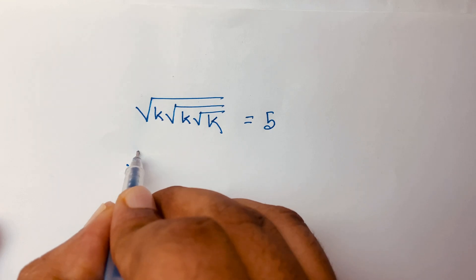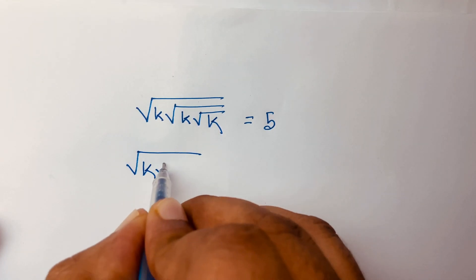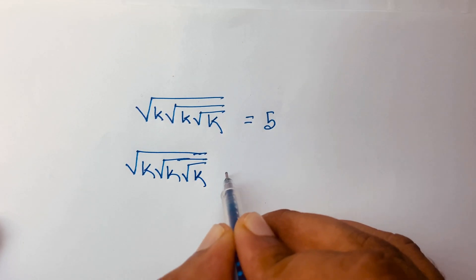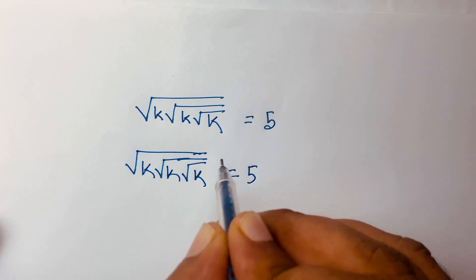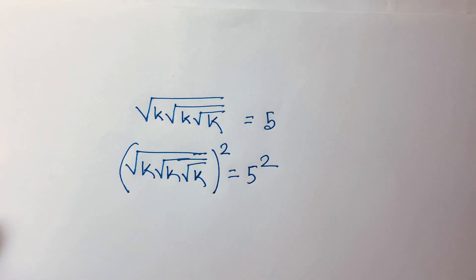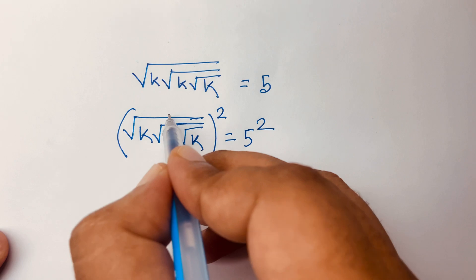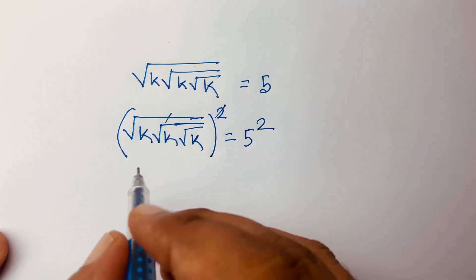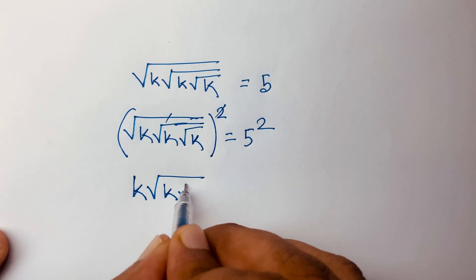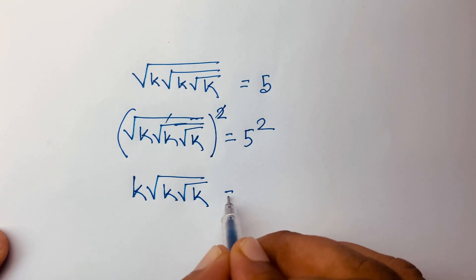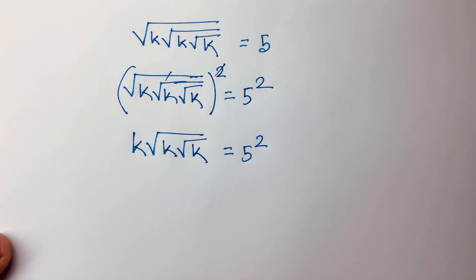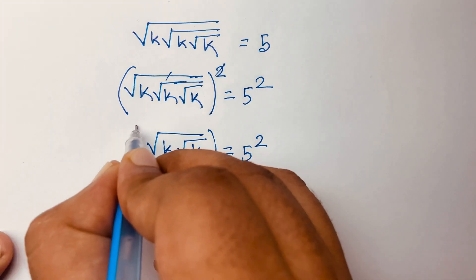So we have √k · √k · √k = 5. I use both sides whole squared, then the square root is cancelled. We find out here is k · √k · √k = 5 squared. Then I use again both sides whole squared.